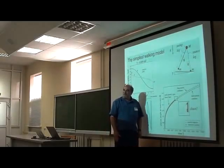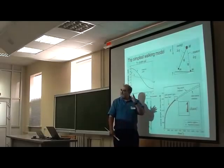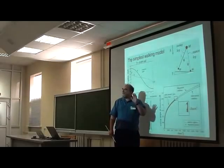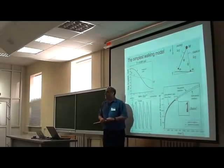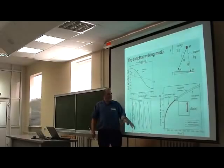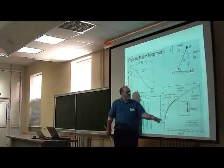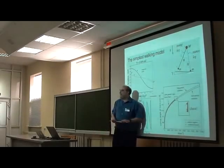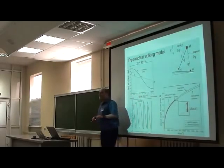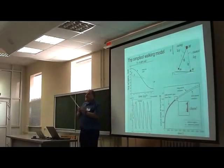One interesting feature is that there are solutions all the way down to zero slope. Even though we have walking on a slope, this can walk on arbitrarily small slopes. As the slope gets smaller, the angle between the legs gets smaller, and the period is roughly constant — set by the double-pendulum frequency. So as the stance angle gets smaller, the speed goes to zero. The solution exists down to zero slope but with zero speed.